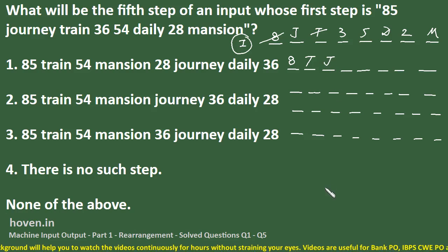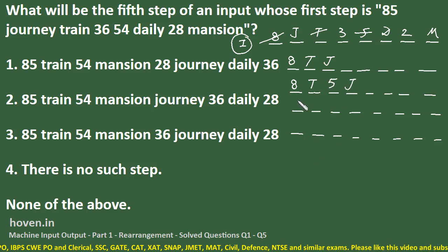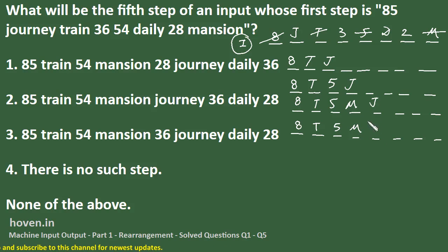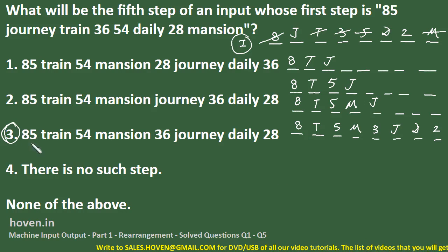Continuing to the fifth step: 8, T, 5, M — now the turn of the number. 3 and 2 remain; 3 is bigger so 3 comes, then J as closing, then D and 2 follow. So the fifth step is: 8, T, 5, M, 3, J, D, 2. Comparing with the options, the third option matches. This is the required answer.